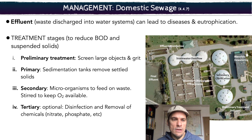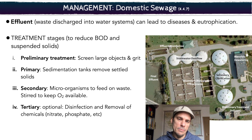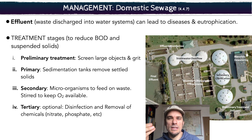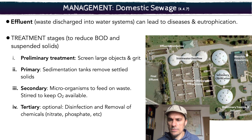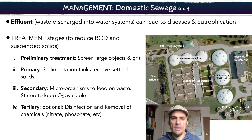The ways we treat sewage — generally these plants are divided into three pieces, and a fourth depends on regulation and laws. So the preliminary treatment: you screen the big pieces out, and you can see that in the picture. There's screening going on to get the big pieces out, to get the sand and grit out of there.